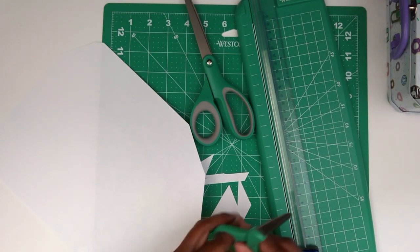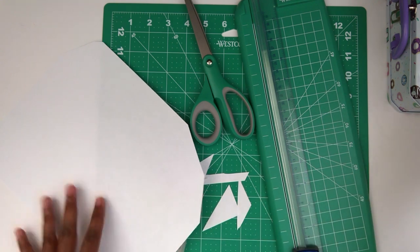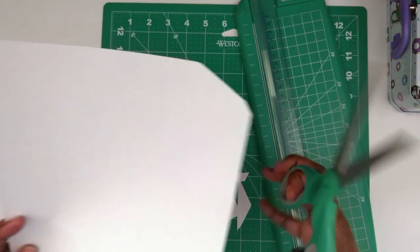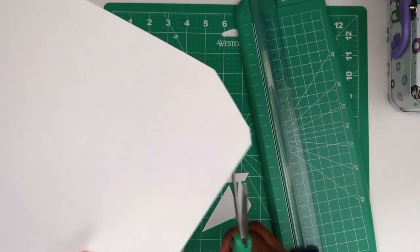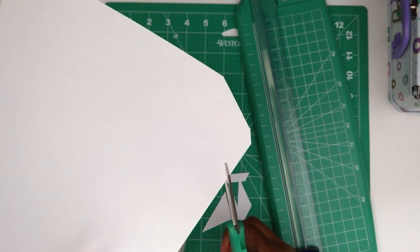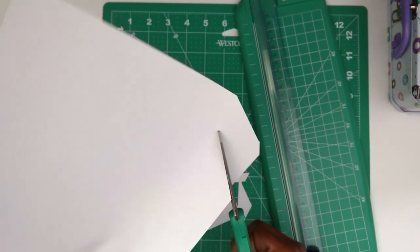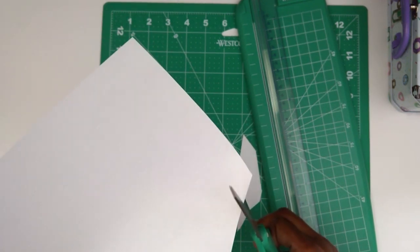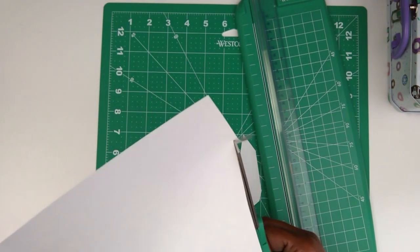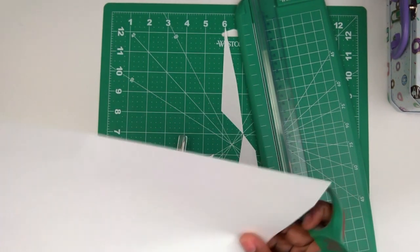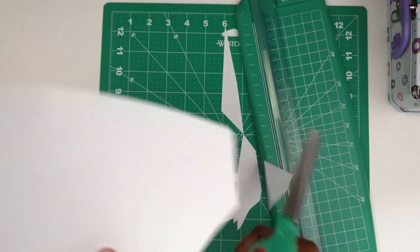So those are the smaller ones and it's good to have tiny scissors and larger ones as well for different projects and different things that you need to cut. So those are the larger ones. They slice so nicely. Oh my gosh. I'm really impressed with that. They are really nice and sharp.